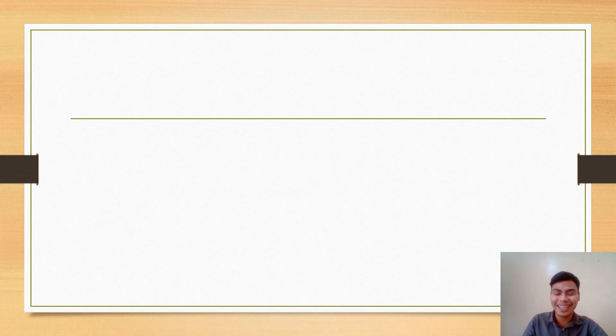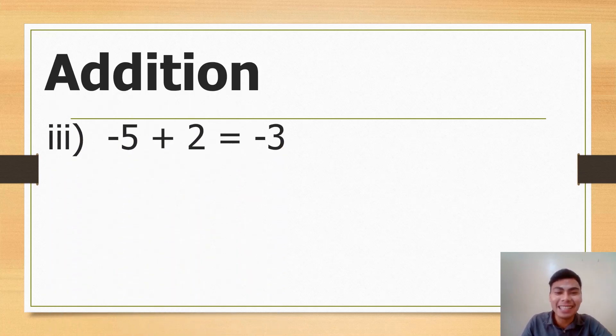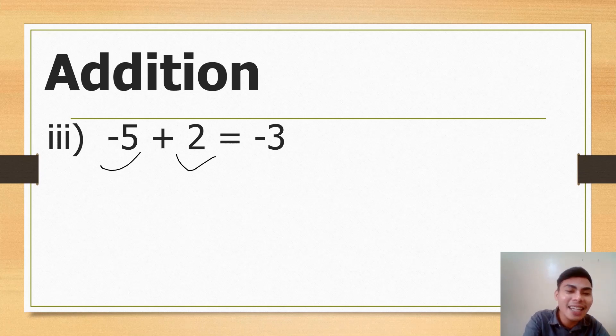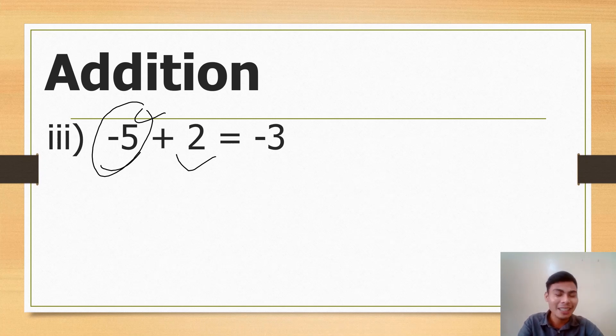So let us have the third case in addition. We will add different signs. So ano naman ang gagawin natin if different signs? Kung different signs po, just subtract the two numbers and copy kung sino yung mas malaki. Copy the sign of those holding the bigger number. So in our case, we are adding now different signs. Tingnan nyo po: negative 5 and a positive 2.